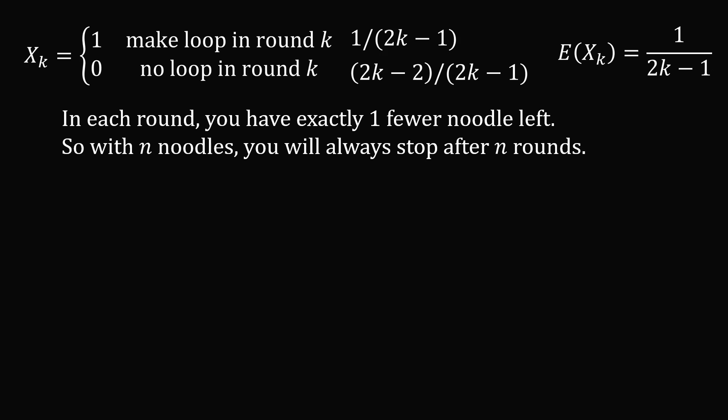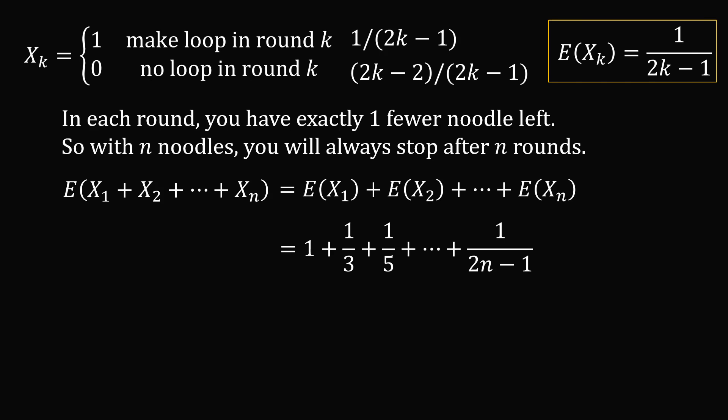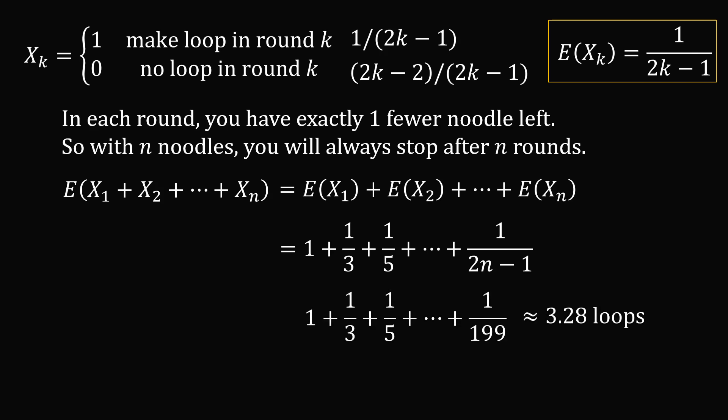In each round you have exactly one fewer noodle left, so when you start with n noodles, you will always stop after n rounds. This is an important detail not often seen in presentations of this problem. The expected number of loops is always E[x1 + x2 + ... + xn]. By the linearity of the expectation operator, this equals E[x1] plus E[x2] plus ... plus E[xn]. Substituting our formula for E[xk], we have derived the formula. For n equals 100, this is approximately equal to 3.28 loops — what an amazing solution.